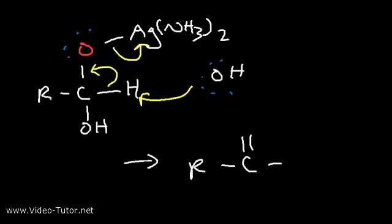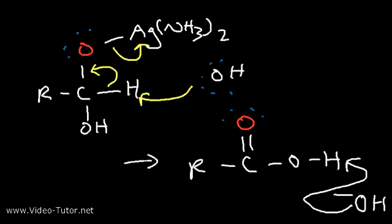So now, we have a carboxylic acid, which won't last very long under basic conditions. So another hydroxide ion is going to remove this hydrogen. So we're going to get the carboxylate ion. So that's the mechanism for the Tollens reagent. That's how you can oxidize an aldehyde into a carboxylate ion using silver.